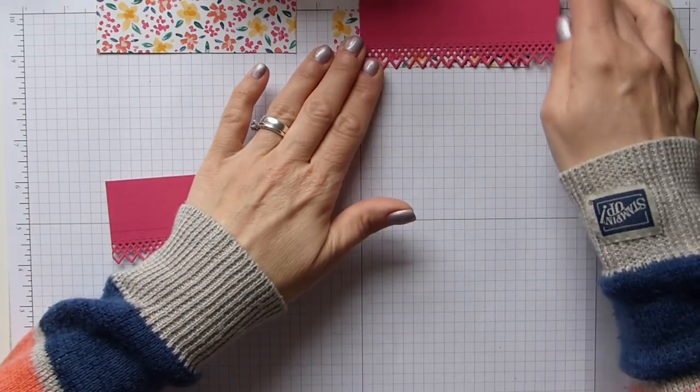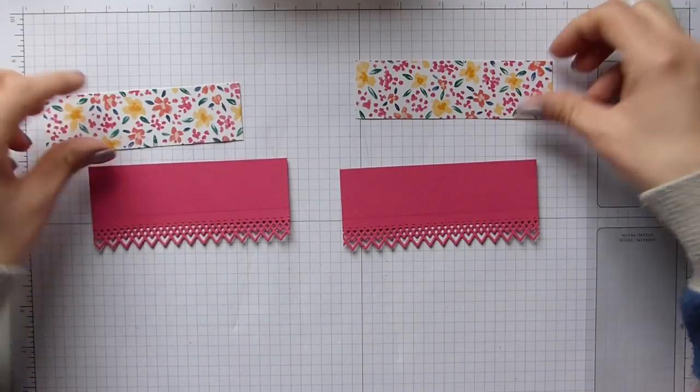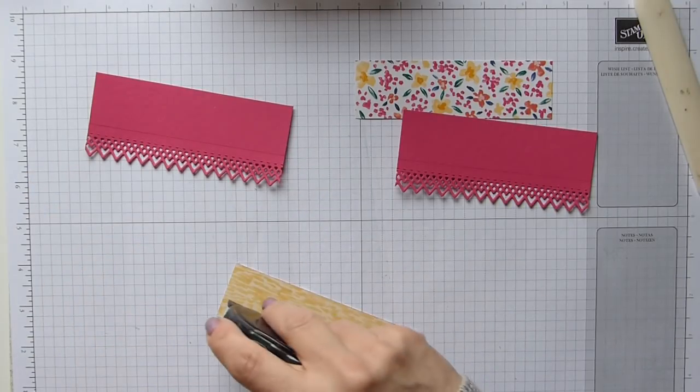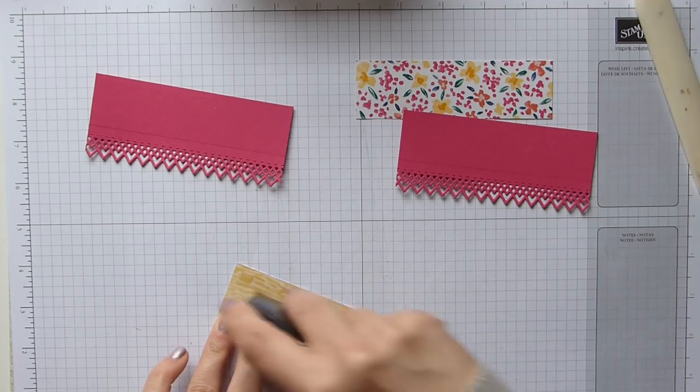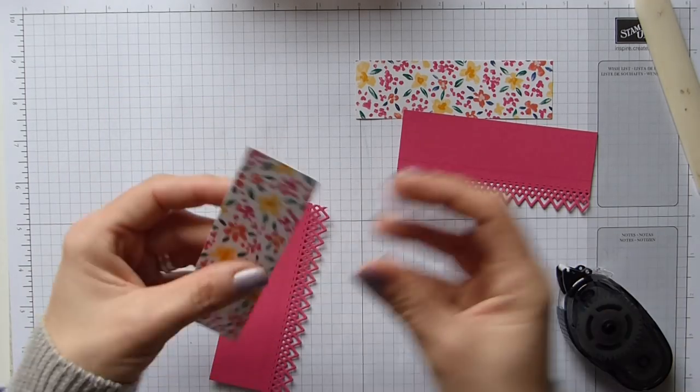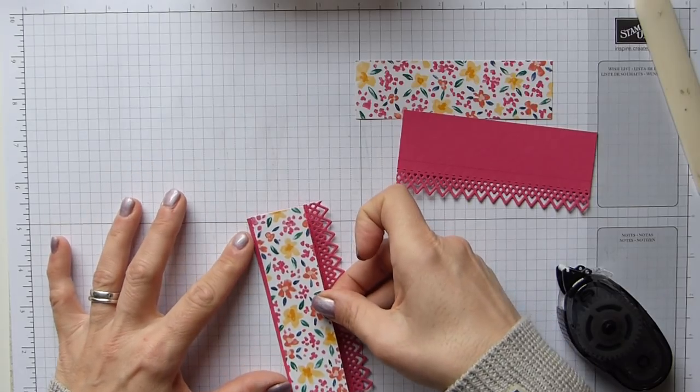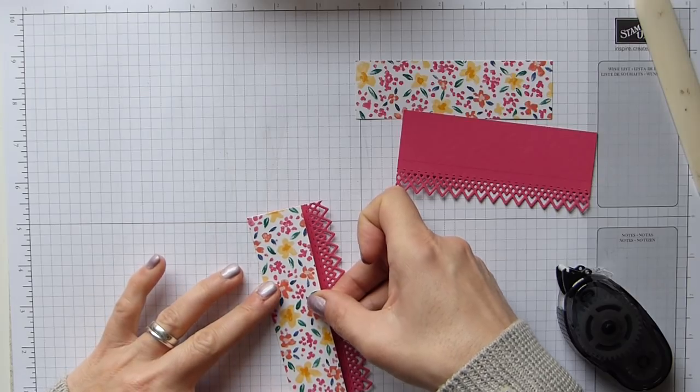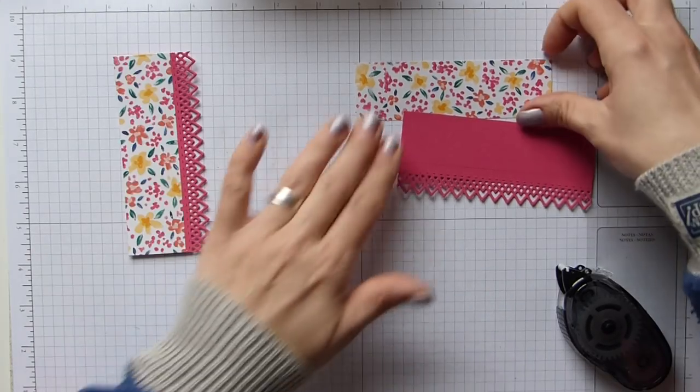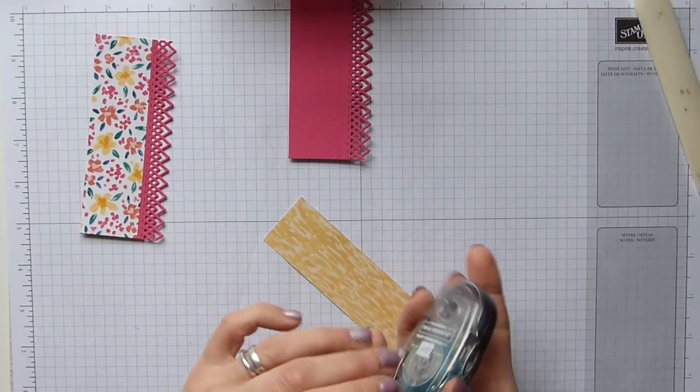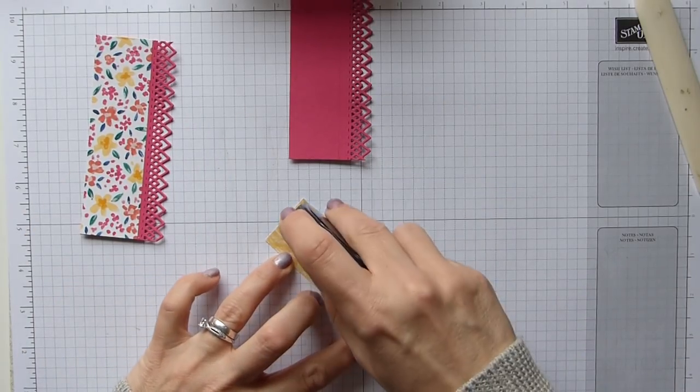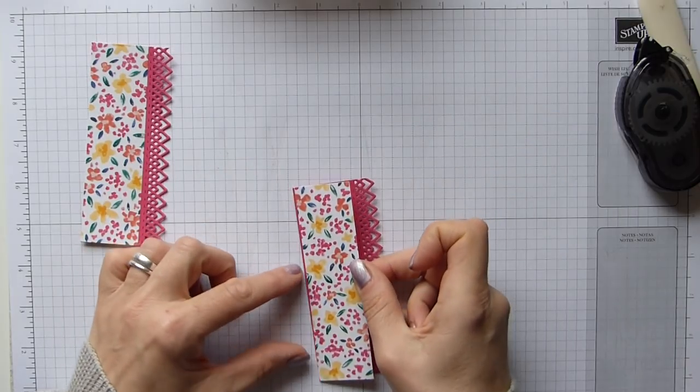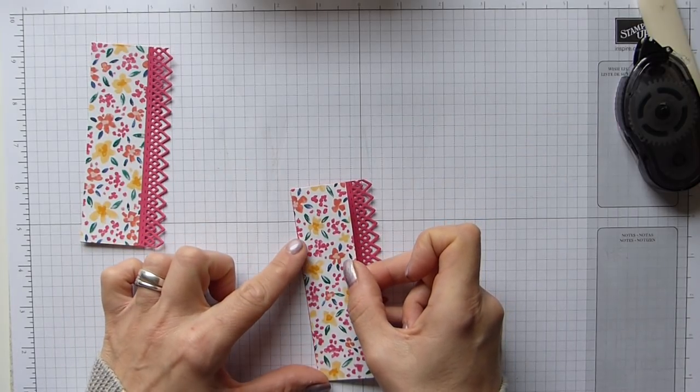So I now have two panels and then I have my beautiful DSP, which is four and three quarters by one and three eighths. Then I'm just simply going to stick it on here and I'm just going to line it up with the top of my cardstock. And likewise with this one. Same again on this one. Again, lining it up with the edges and the top.